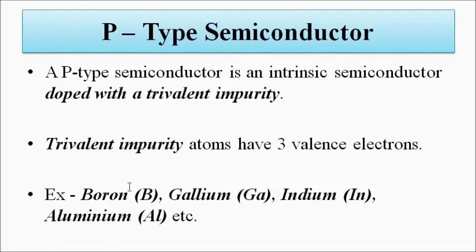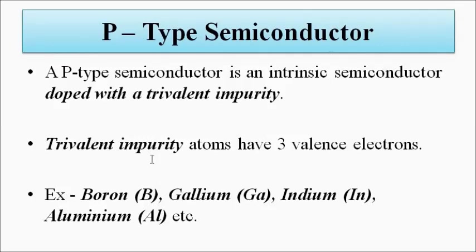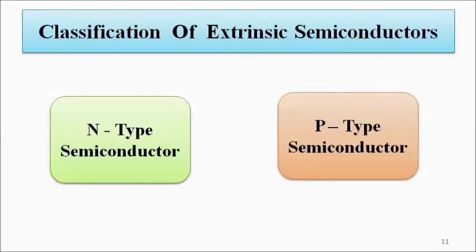P-type semiconductors are those doped with a trivalent impurity, which has three valence electrons in their outer orbit. In p-type semiconductors, the majority charge carriers are holes. We will discuss in detail why majority carriers are electrons in n-type and holes in p-type. Examples of trivalent impurities are boron, gallium, indium, and aluminium. So the classification of semiconductors is: by composition — simple or compound; by doping — intrinsic or extrinsic, with extrinsic further divided into p-type and n-type.